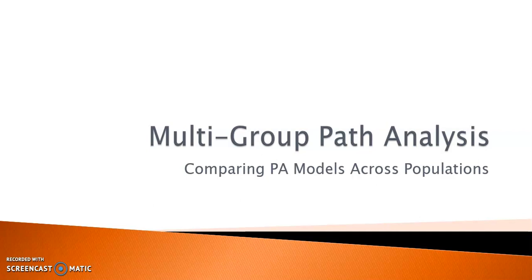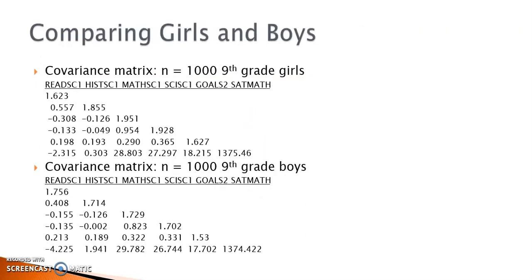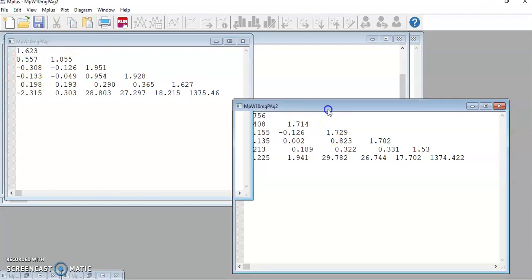In this video, I'm going to demonstrate the multi-group comparison using a path model. In this model, there are four exogenous variables: reading, history, math, and science self-concepts, and they have impacts on two endogenous variables: goal orientation and the SAT math score. The research objective is to see whether this model explains the math performance of girls and boys equally well and identifies gender differences in the structural relations, if any. The covariance matrices are available for boys and girls separately, so you can prepare summary data files in Mplus.